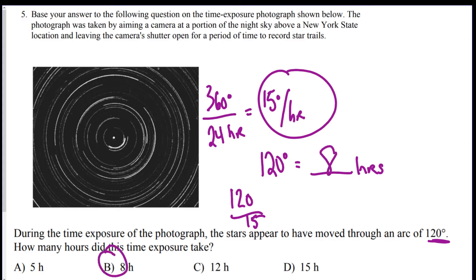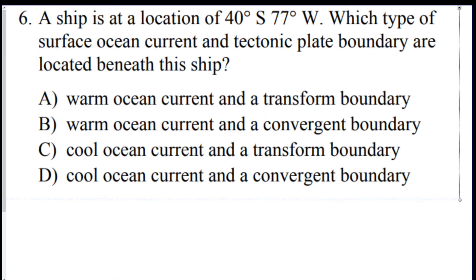The only way to get this question is to know the earth rotates 15 degrees per hour. Also note: the star in the middle of those photographs is Polaris, because it does not move in the northern hemisphere — it sits on the earth's axis.